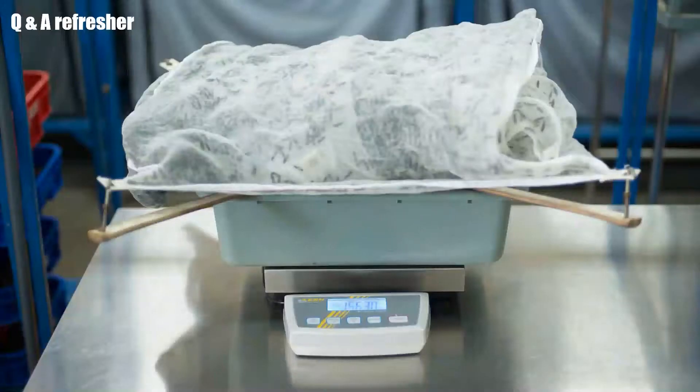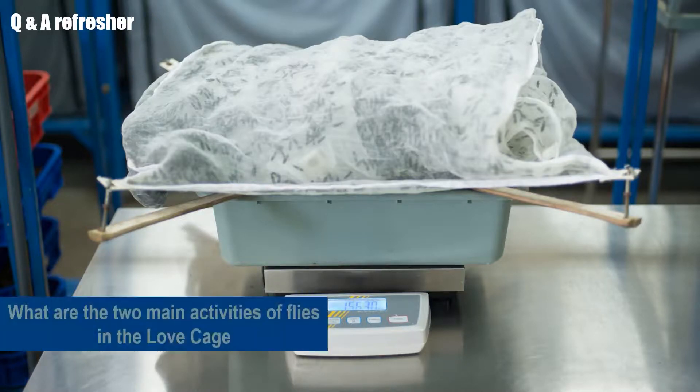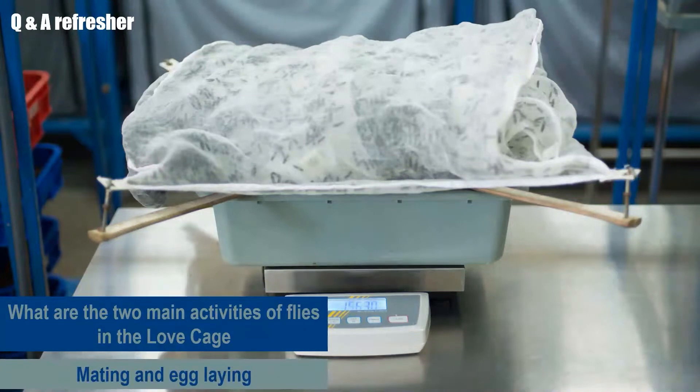So we have almost come to the end of this module, time for a little refreshing. Here we have two questions for you. What are the two main activities of flies in the loft cage? The two main activities are mating and egg laying.